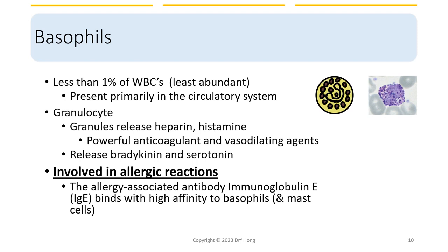The third type of granulocyte is basophils. They are the least abundant, about 1% of white cells. In contrast to eosinophils found underneath mucosal membranes, basophils are found primarily in the circulatory system. Their granules release histamine and heparin, which are powerful vasodilating agents and anticoagulants. They can also release bradykinin and serotonin. They are mostly involved in allergic reactions. Allergy-associated antibodies called IgE bind with high affinity to basophils and mast cells, initiating allergic reactions. We will talk about these hypersensitivity reactions during the later half of the course.